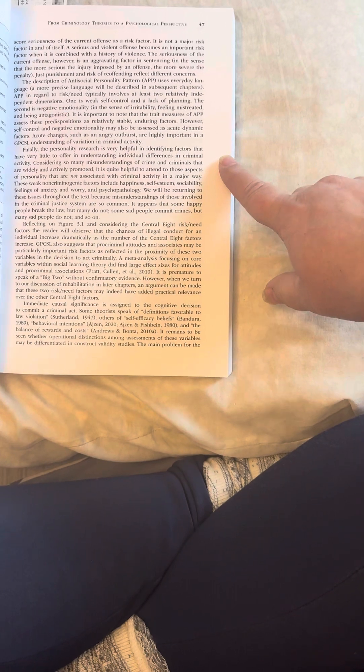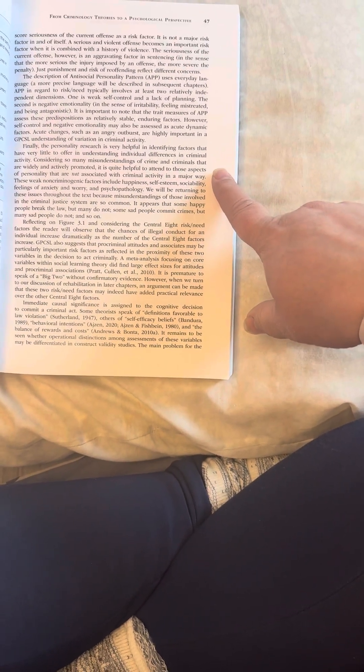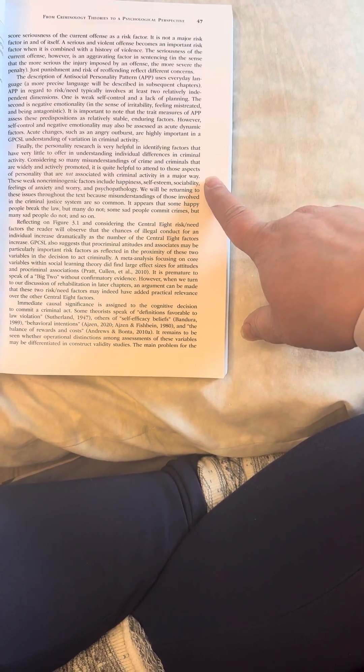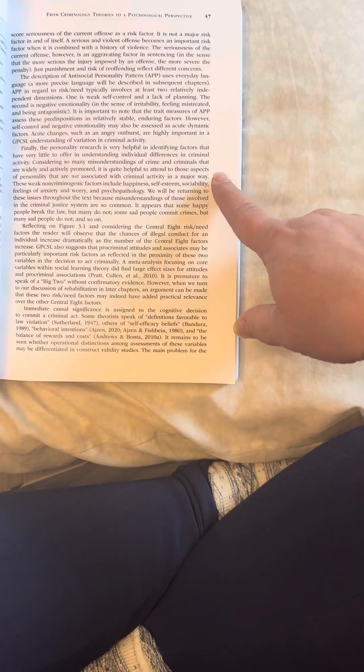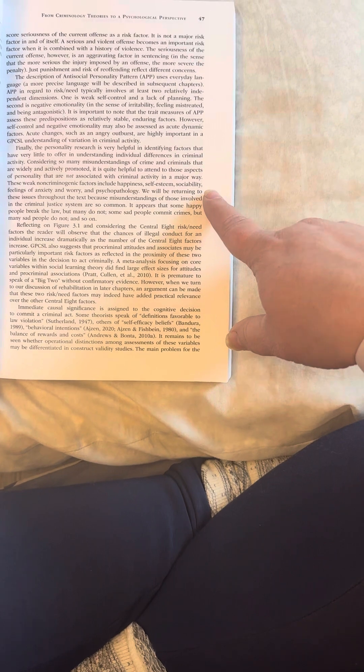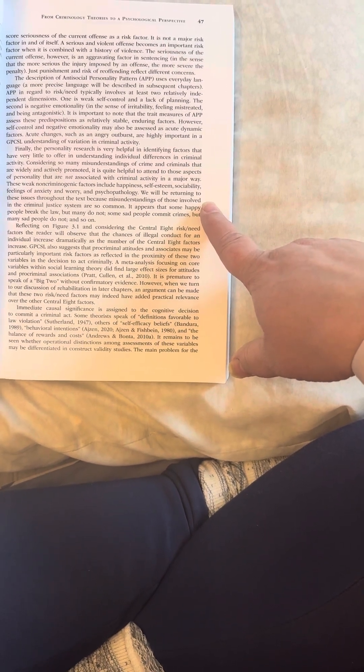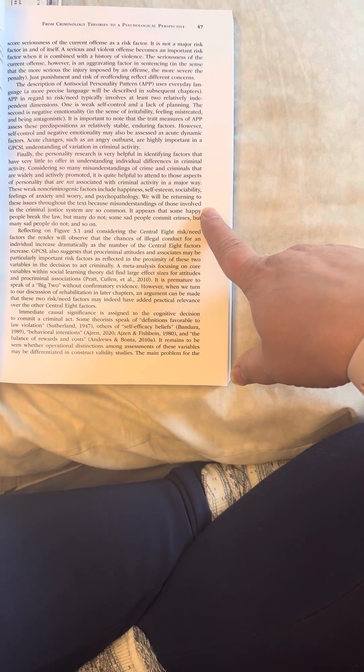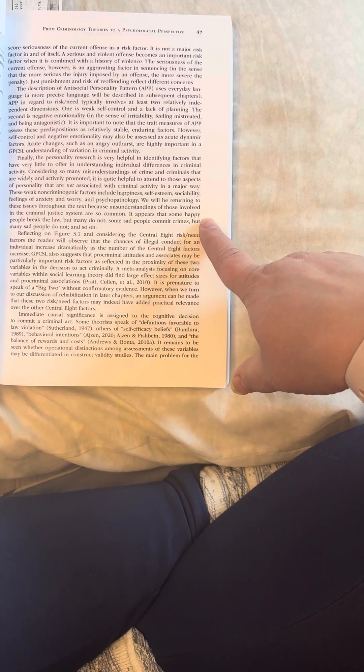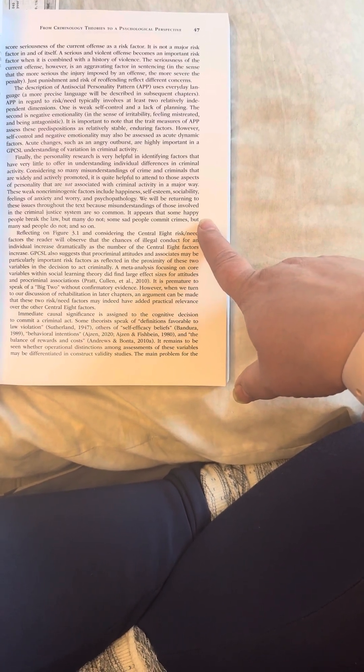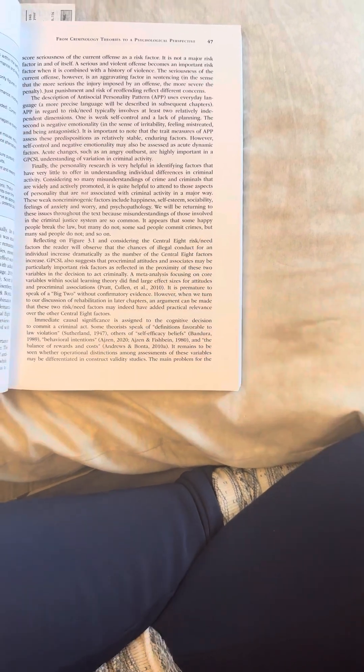Considering some misunderstandings of crime and criminals that are widely and actively promoted, it is quite helpful to attend to those aspects of personality that are not associated with criminal activity in a major way. These weak non-criminogenic factors include happiness, self-esteem, sociability, feelings of anxiety and worry, and psychopathology. We will be returning to these issues throughout the text because misunderstandings of those involved in the criminal justice system are so common. It appears that some happy people break the law, but many do not. Some sad people commit crimes, but many sad people do not, and so on. Reflecting on figure 3.1 and considering the central eight risk-need factors, the reader will observe that the chances of illegal conduct for an individual increase dramatically as the number of the central eight factors increase.